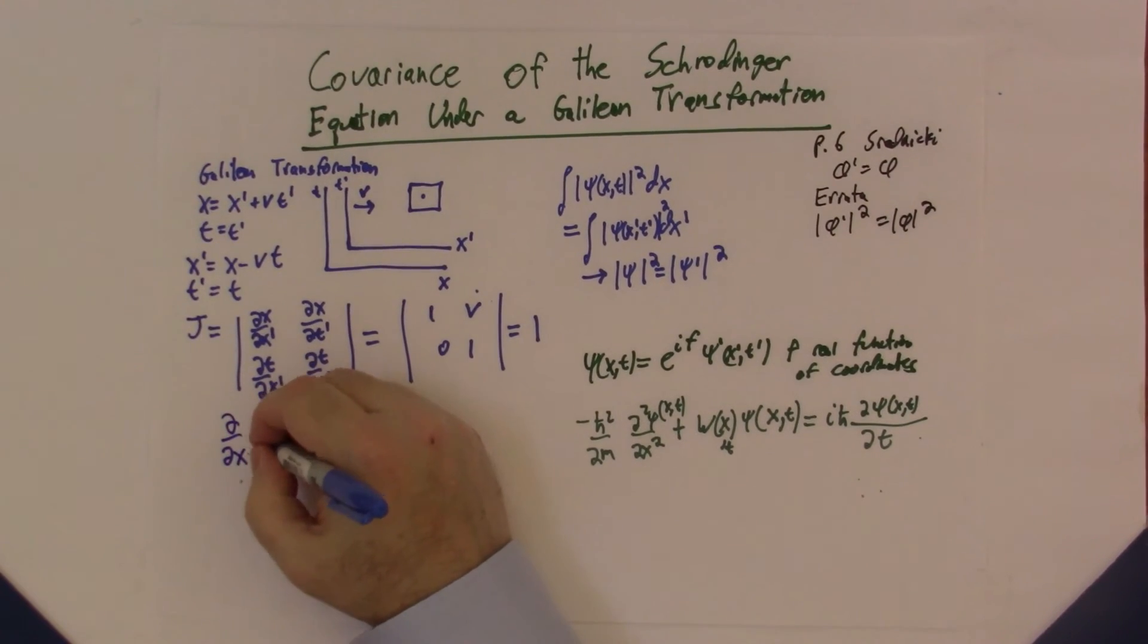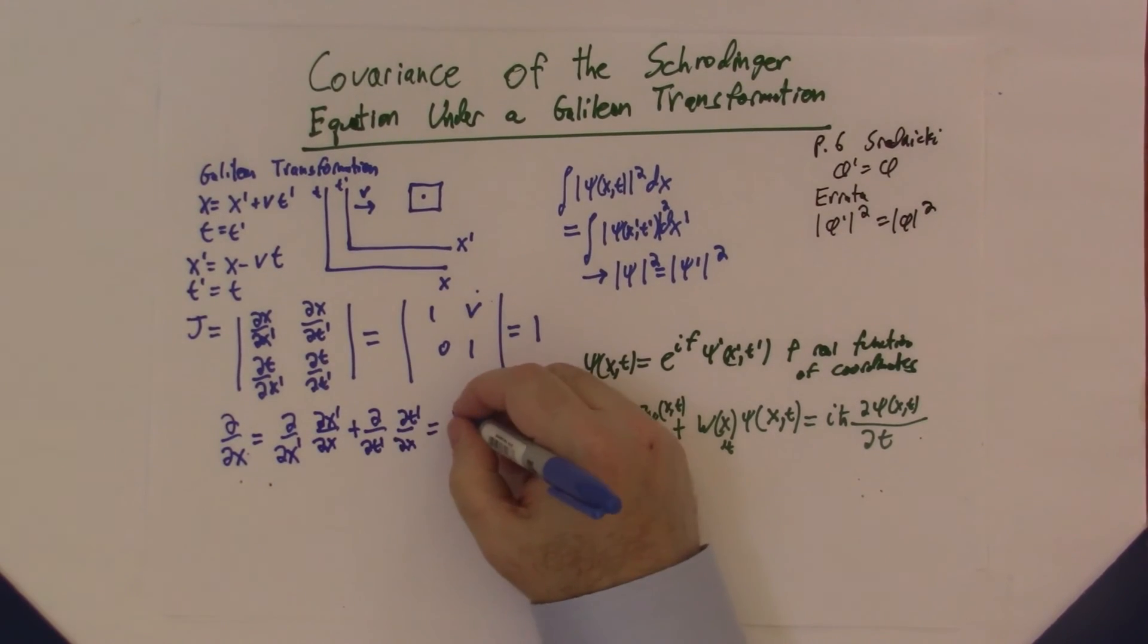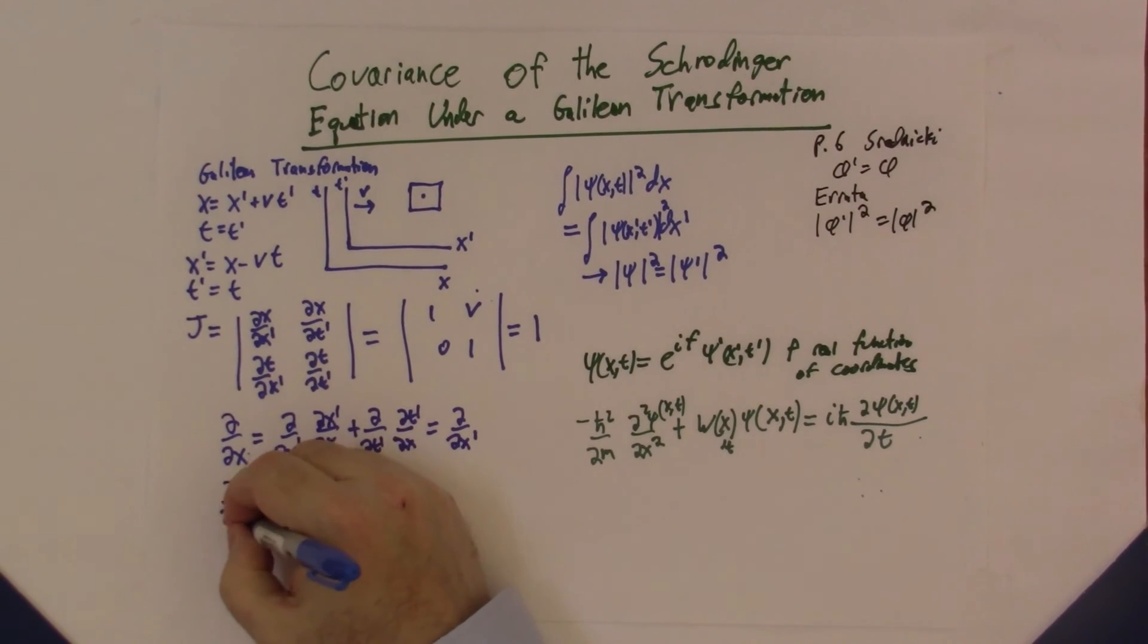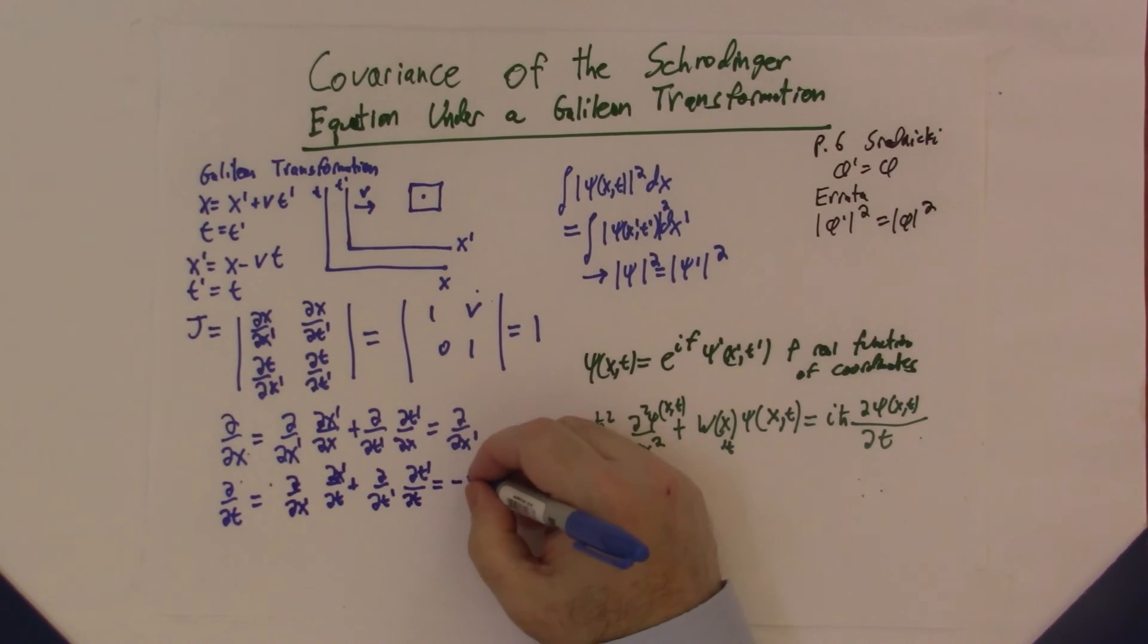The partial with respect to x equals the partial with respect to x' times ∂x'/∂x. This is just standard second-year multivariable calculus we learned a long time ago. This ends up being the partial with respect to x'. Then the partial with respect to t equals ∂/∂x' times ∂x'/∂t plus ∂/∂t' times ∂t'/∂t.